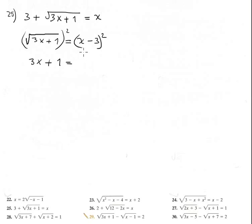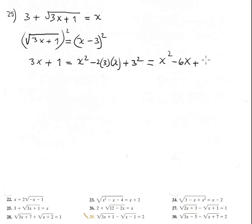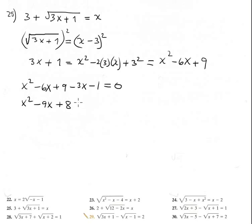Expand using FOIL: square the first, minus 2 times the product of both, plus square the second — giving x squared minus 6x plus 9. Set up the equation: x squared minus 6x plus 9 minus 3x minus 1 equals 0, which simplifies to x squared minus 9x plus 8 equals 0.